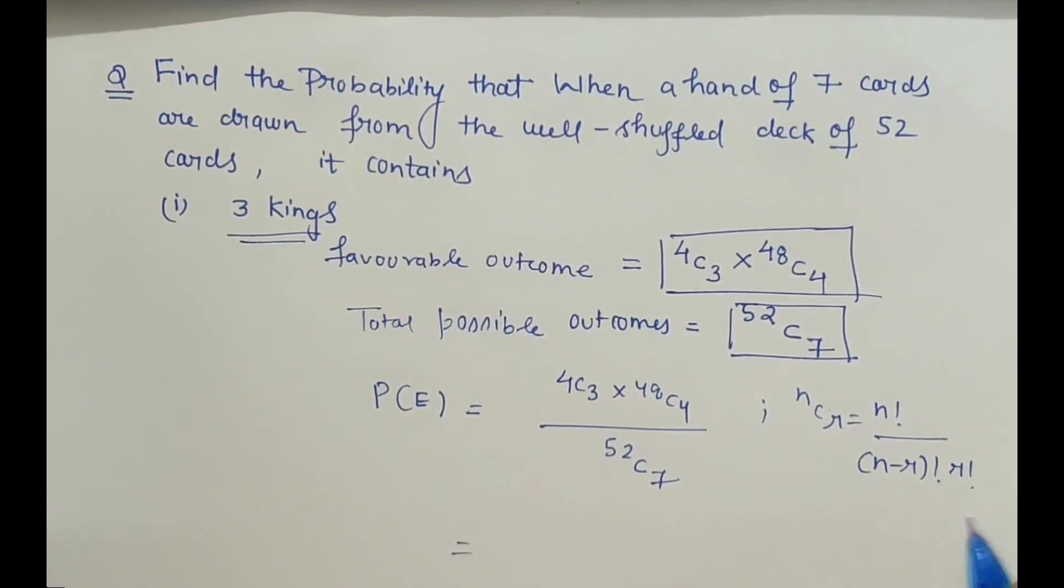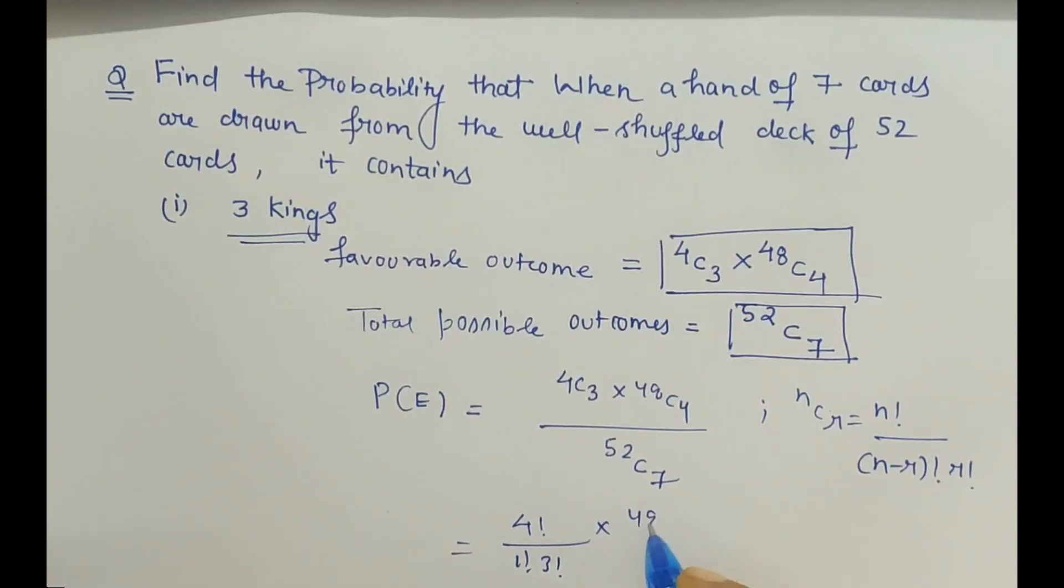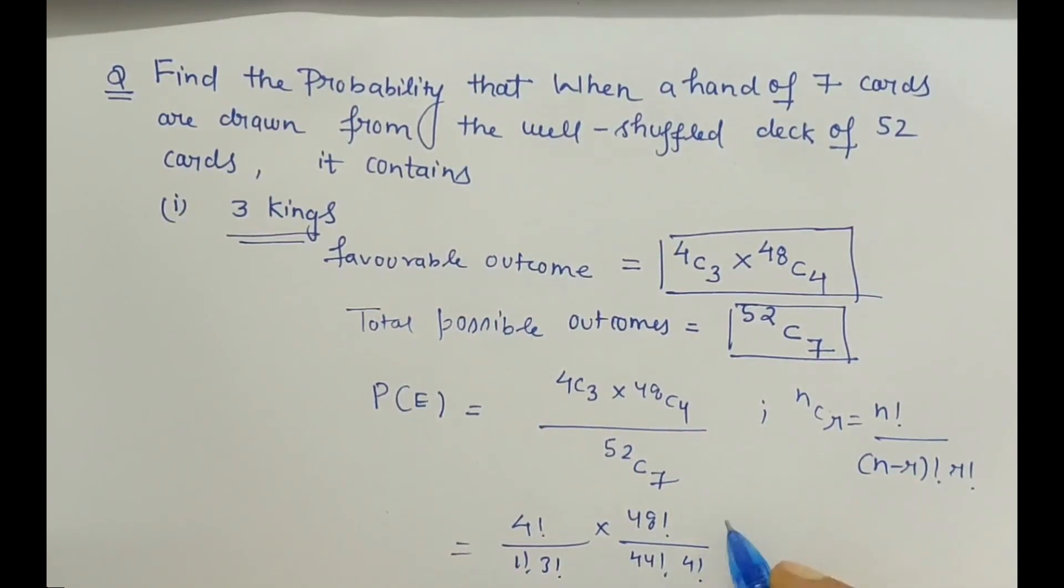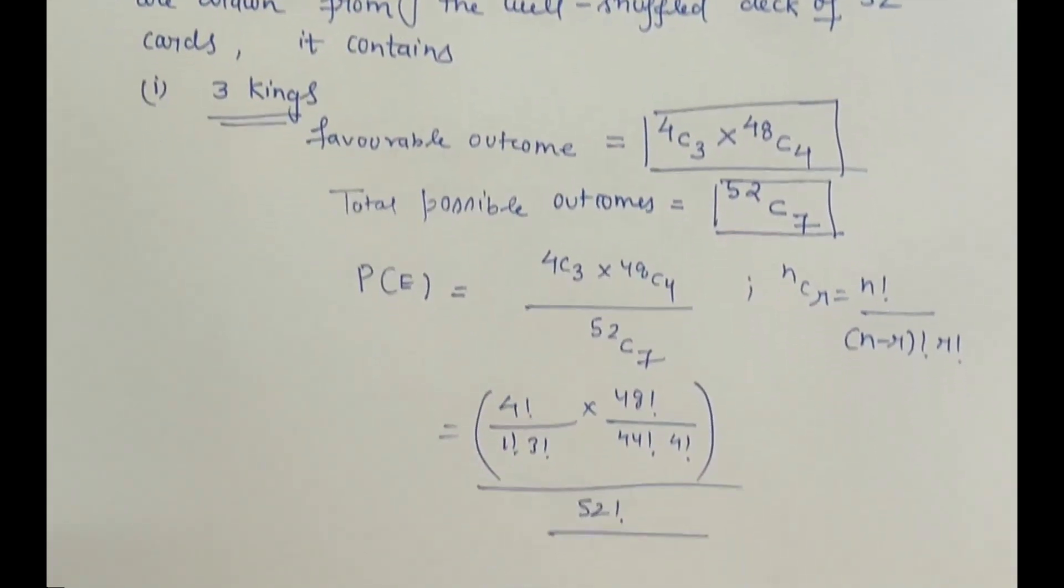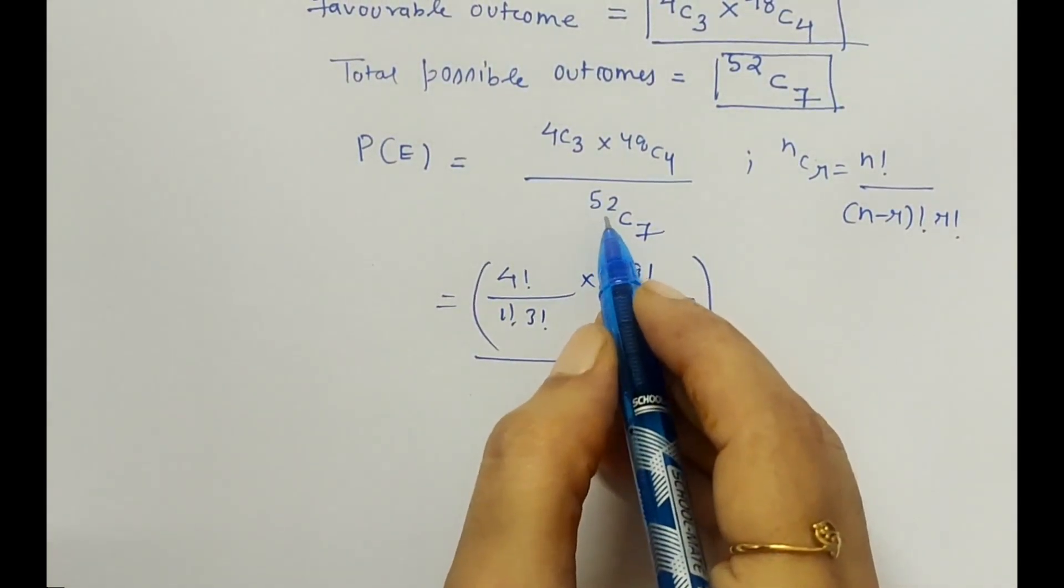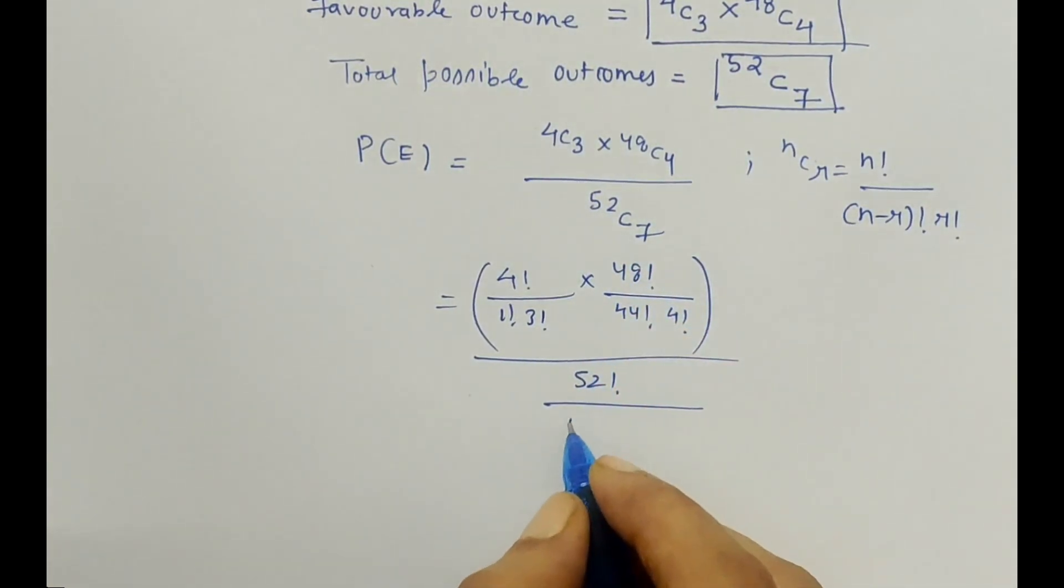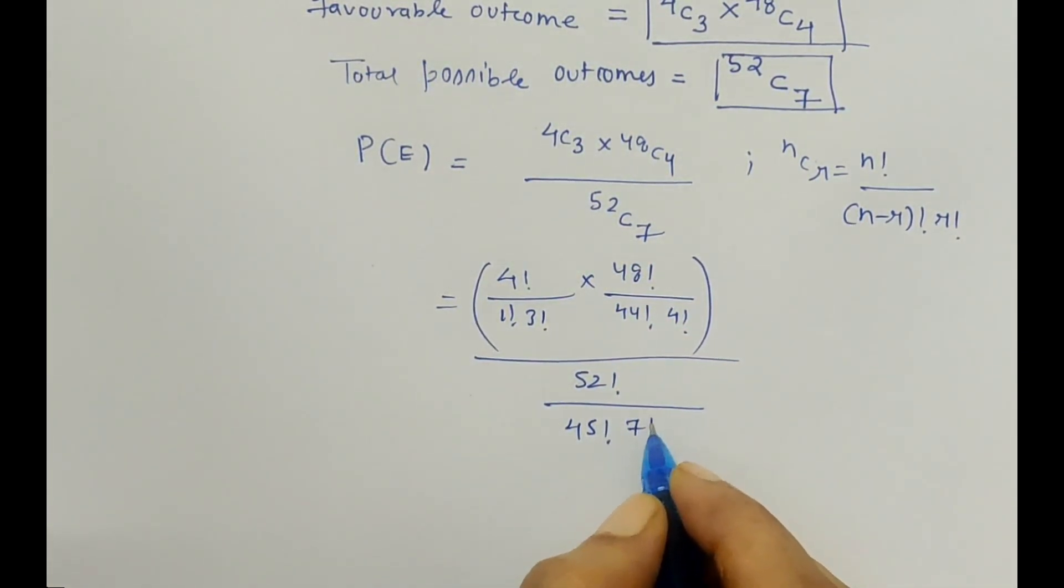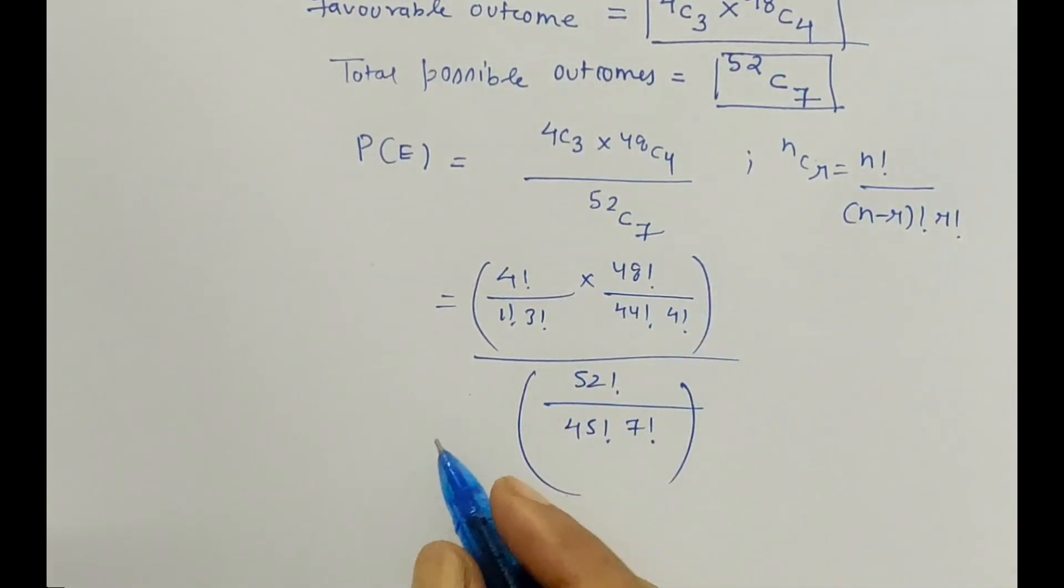So here it is 4 factorial upon 4 minus 3, which is 1 factorial, and 3 factorial, times 48 factorial upon 48 minus 4 is 44 factorial and 4 factorial. This is the numerator, and the denominator is 52 factorial upon 52 minus 7 is 45 factorial and 7 factorial.